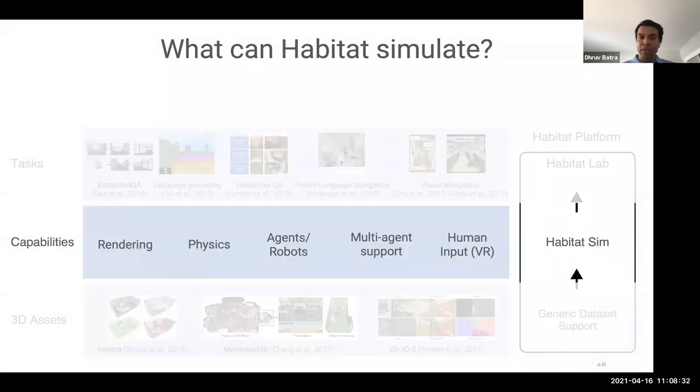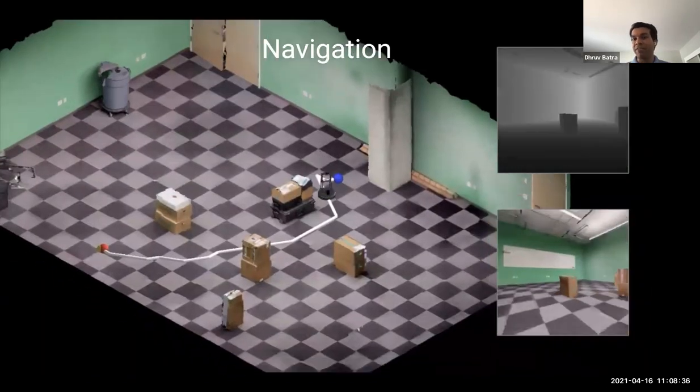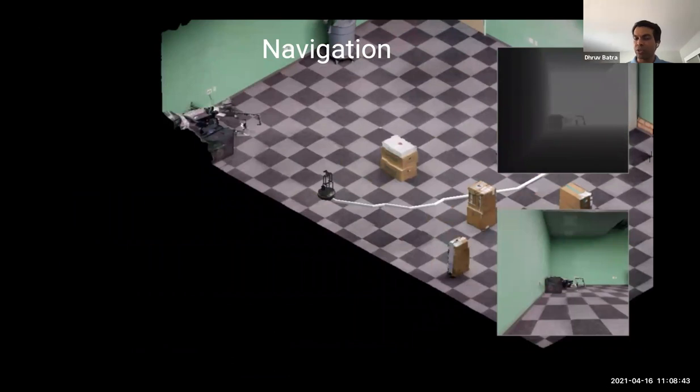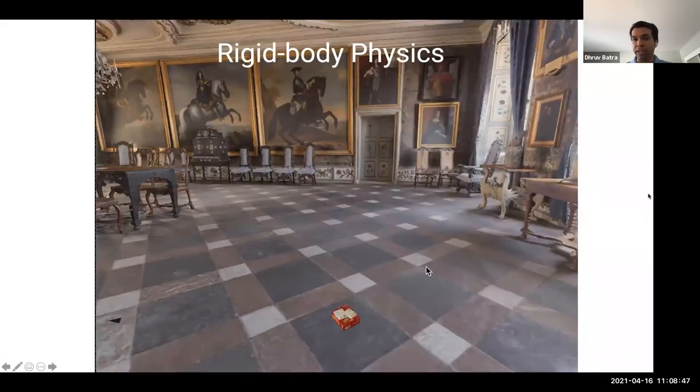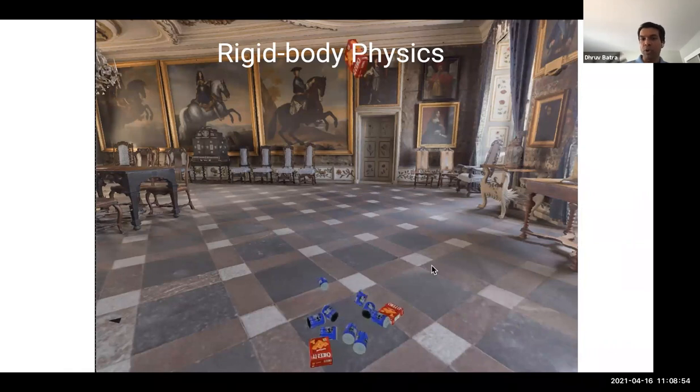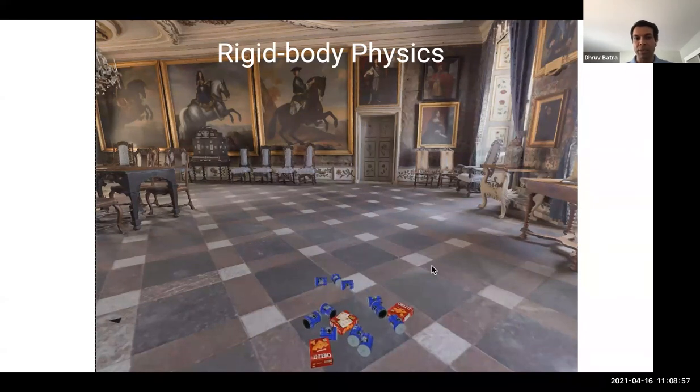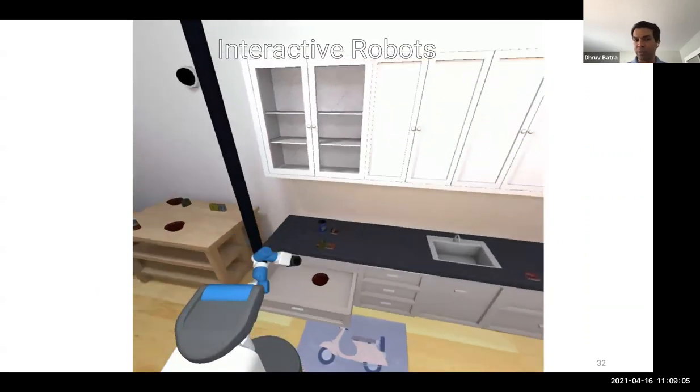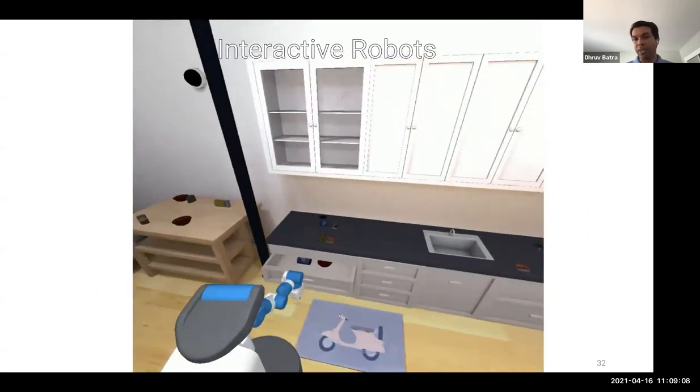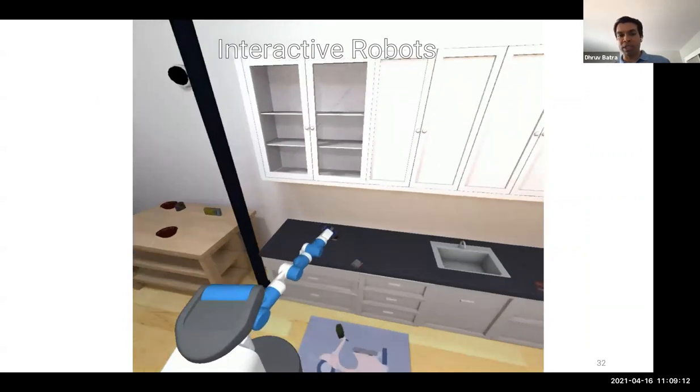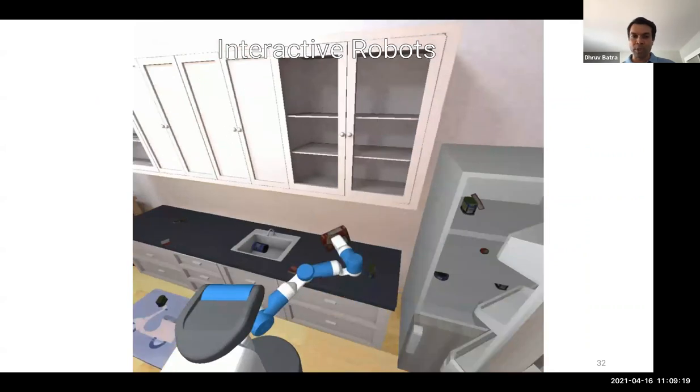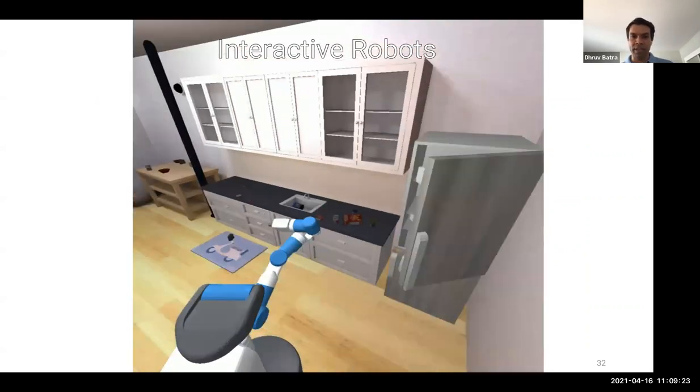So in terms of the simulator capabilities, we have, of course, been studying navigation and rendering type tasks. We can insert a robot in these scans. We can render egocentric RGB and depth. We have integrated this with rigid body physics. Habitat has an integration with bullet physics engine. So you can insert objects, you can apply forces, you can simulate gravity, you can simulate collisions, and there are full interactive robots. So this is a fetch robot in simulation of an indoor space, picking an object, opening cabinets, putting an object in cabinets.